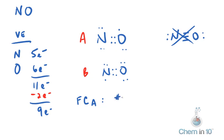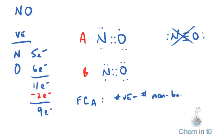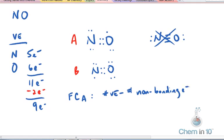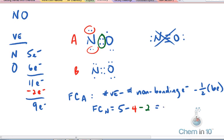Remember formal charge is the number of valence electrons minus the number of non-bonding electrons minus 1 half the number of bonding electrons, the number of bonding electrons. So for nitrogen in the A structure, nitrogen has 5 valence electrons, in this case nitrogen has 4 non-bonding electrons, and it has 4 bonding electrons and half of that is 2. So nitrogen has 2, so nitrogen has a formal charge of negative 1.